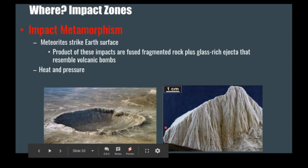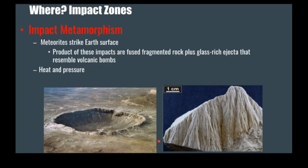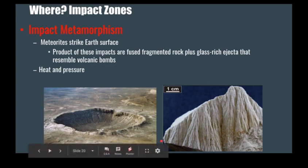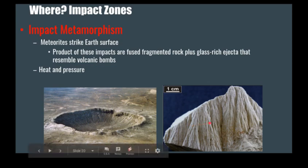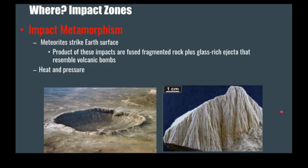So that's it for different areas of where metamorphism can occur. Keep in mind that even though we talked about heat and pressure separately, usually in any of these metamorphosing environments, you have a combination of the different metamorphosing agents. Thank you. I hope you learned something from the video, and if you enjoyed it, feel free to follow this channel and watch some more videos.